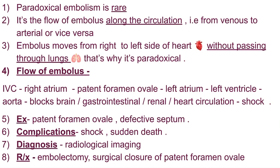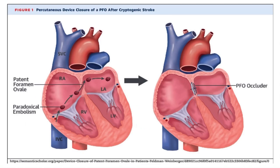Paradoxical embolism is seen in patients with patent foramen ovale and defective septum. Complications include shock and sudden death in case of severe obstruction in the brain. Diagnosis is done via radiological imaging. Treatment is embolectomy — removal of the embolus — and surgical closure of the patent foramen ovale. Here you can see the PFO occluder device used for this purpose.